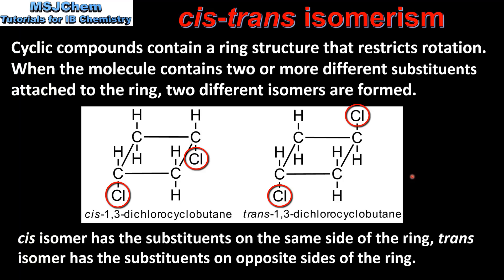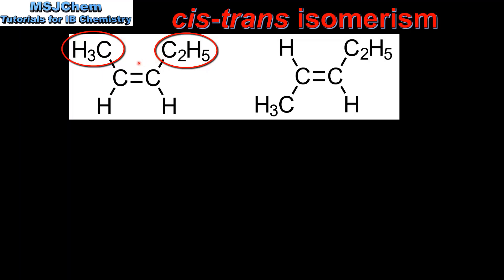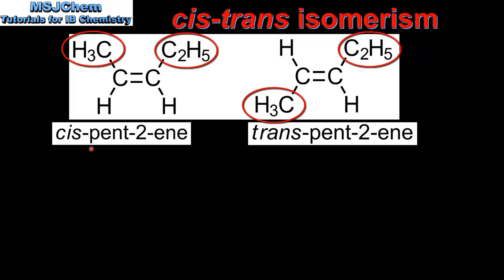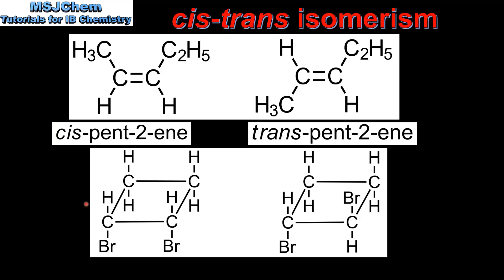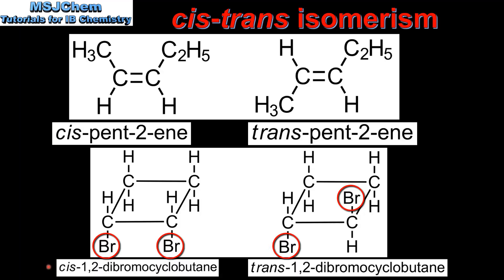Next we look at a couple more examples, starting with molecules that have a carbon to carbon double bond. The molecule on the left has the two substituents on the same side of the carbon to carbon double bond, and the molecule on the right has the two substituents on opposite sides. So on the left we have cis-pent-2-ene and on the right we have trans-pent-2-ene. Our last example is a cyclic compound: the molecule on the left has both bromine atoms on the same side of the ring, giving cis-1,2-dibromocyclobutane, and the molecule on the right has the bromine atoms on opposite sides, giving trans-1,2-dibromocyclobutane.